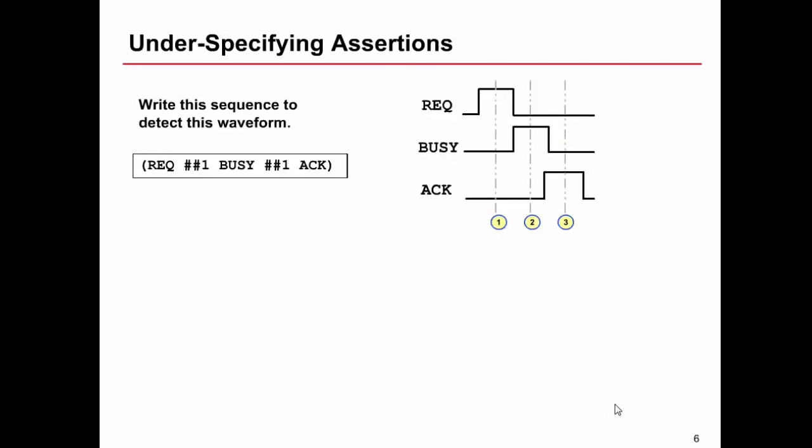Another thing to be careful of when you first start writing assertions is under-specifying what checks you need doing. If we take the waveforms, we can see here, rec, busy, and ac, following one cycle after the other. We've seen how we can describe a sequence which represents that, and that's shown here. However,